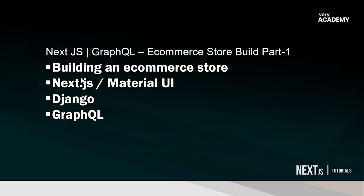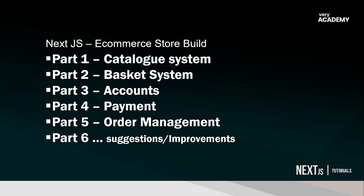To clarify, we're building an e-commerce store utilizing Next.js and Material UI for the front end, with Django implementing GraphQL. If you haven't seen the introduction from the previous series and simply want to learn GraphQL and implement it within a project, we are following a five-part series. In this tutorial we're going to be implementing a catalogue system — just a skeleton catalogue system which we'll work and build upon as we go through the series.